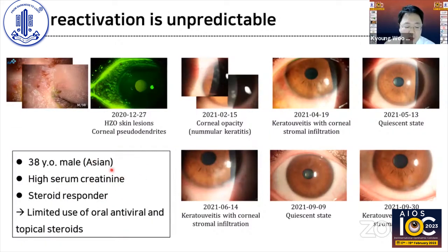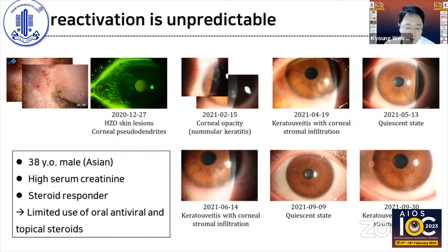Zoster virus reactivation is sometimes very frequent, repeated, and unpredictable. In this 38-year-old male, he initially had pseudodendrites predominantly in the nasal area of his left eye, then nummular keratitis occurred. Thereafter, keratouveitis recurred several times with inferotemporal stromal infiltration. Because his kidney function was poor and IOP fluctuated, managing this patient was very challenging.